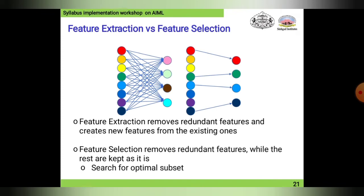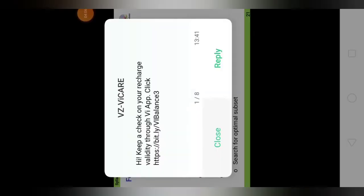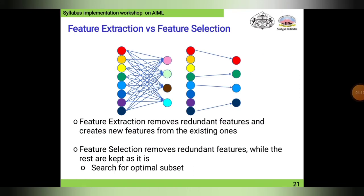Feature extraction versus feature selection — the word itself indicates what each means. Feature extraction: suppose we have a large dataset with numbers from 1 to 1000, and we only want numbers from 100 to 200. We assign a counter that starts at 100 and ends at 200. This is how feature extraction works — it extracts the required subset of data.